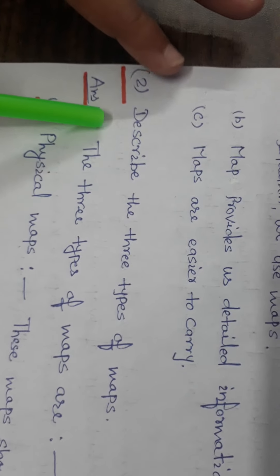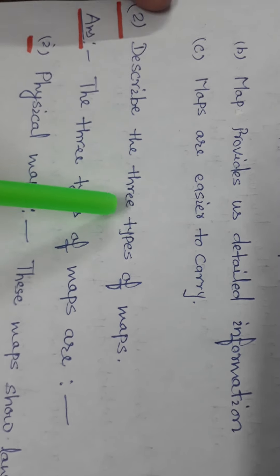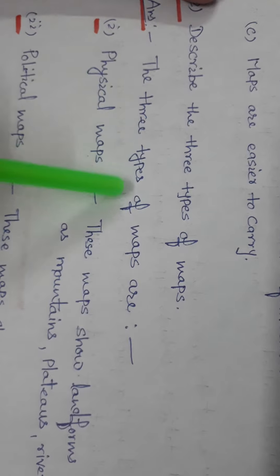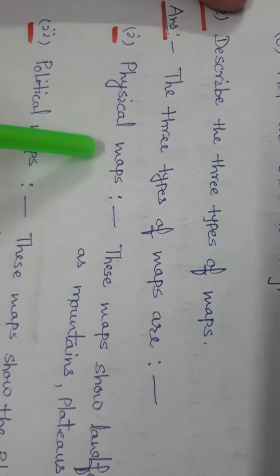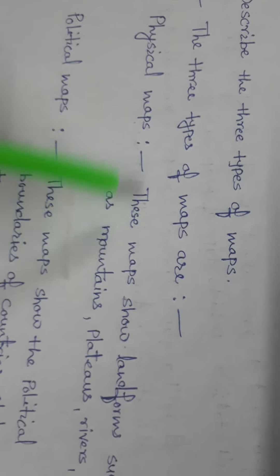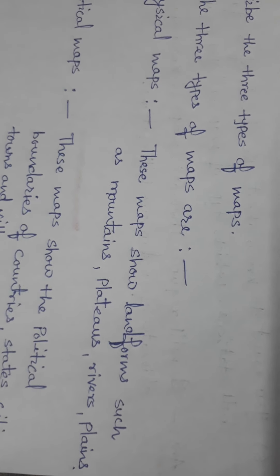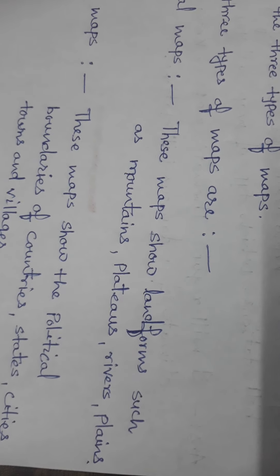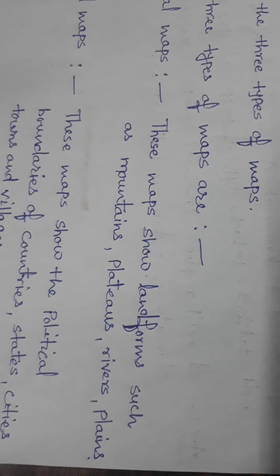Next question is, describe the three types of maps. The three types of maps are, first one is physical maps. These maps show landforms such as mountains, plateaus, rivers, plains.